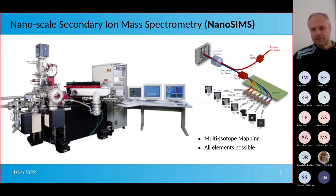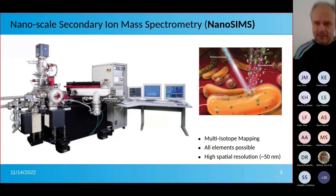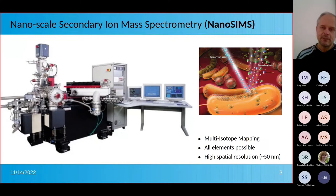It is possible to measure elements simultaneously — up to seven together. The very critical advantage or power of NanoSIMS is that it allows us to do this kind of measurement on a very small scale. The spatial resolution is down to about 50 nanometers, and therefore we can truly see into individual cells, measure individual microbial cells, or subcellular structures in larger cells.